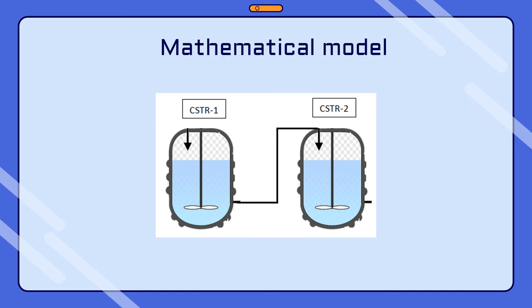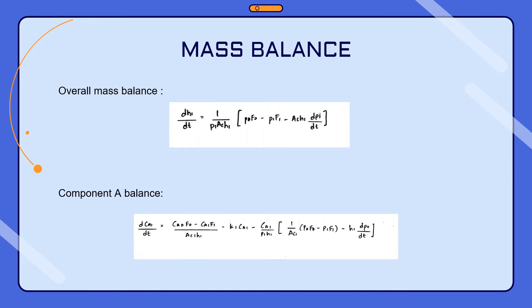This is the mathematical model for our project. We use a CSTR as the reactor. The overall mass balance is: dH1/dt = (1 / (ρ1 · Ac · H1)) · [ρ0 · F0 − ρ1 · F1 − Ac · H1 · (dρ1/dt)].